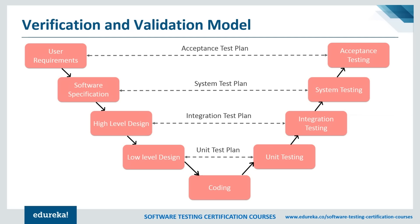That's why it's called the V&V model — verification is the development phase and validation is the testing phase. The V model should be used when requirements are well-defined and not ambiguous, acceptance criteria are well-defined, the project is short to medium in size, and the technology and tools used are not dynamic.